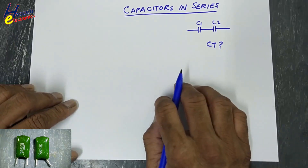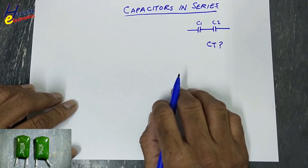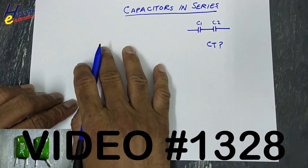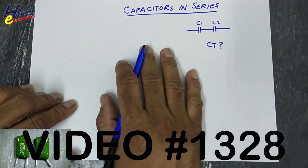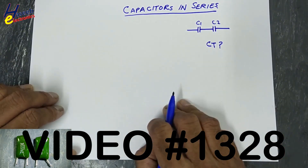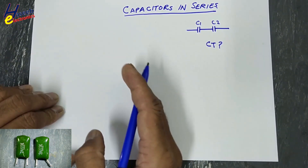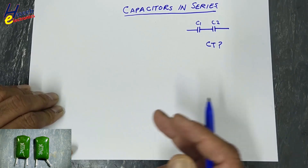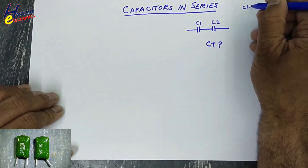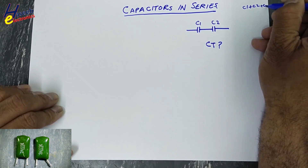Assalamu alaikum wa rahmatullah wa barakatuhu, friends. Welcome back to my channel. In the last session I shared what happens if we connect capacitors in parallel — we discussed that the voltage will remain same and the capacitance will be added using C1 plus C2 plus C3 method.